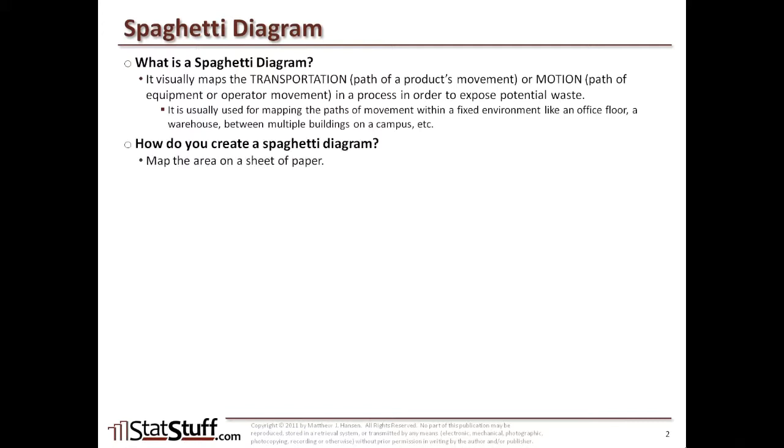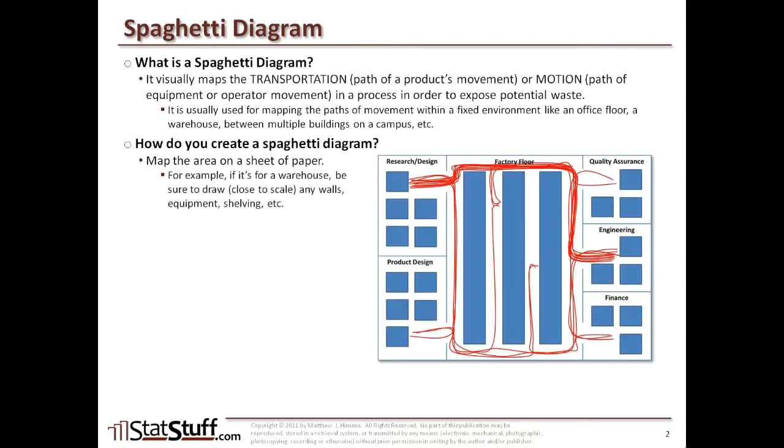Now how do you create the spaghetti diagram? First you would map the area on a sheet of paper, the actual area itself. So if it's a warehouse you need to make sure that you draw any walls or any areas of equipment or shelving or things that you need to move around.